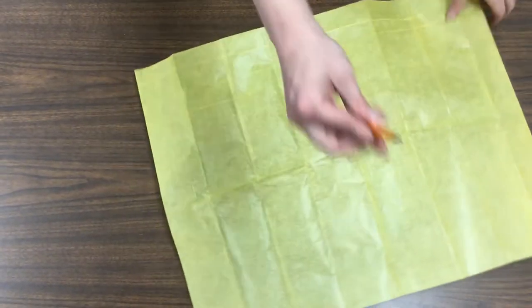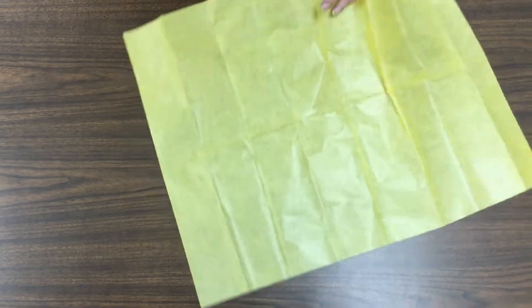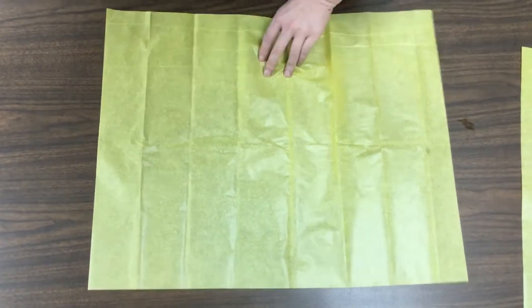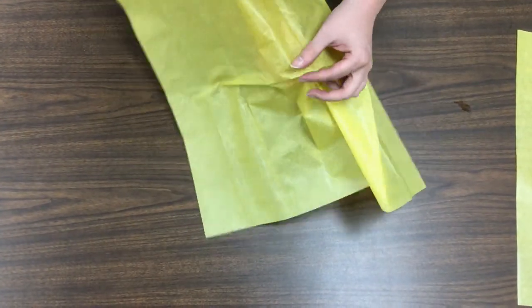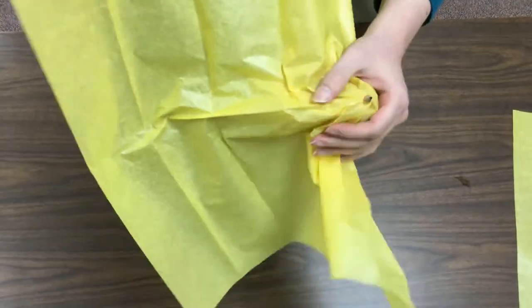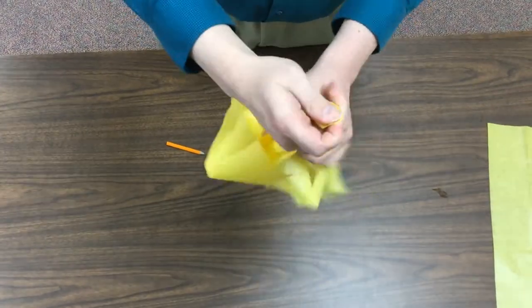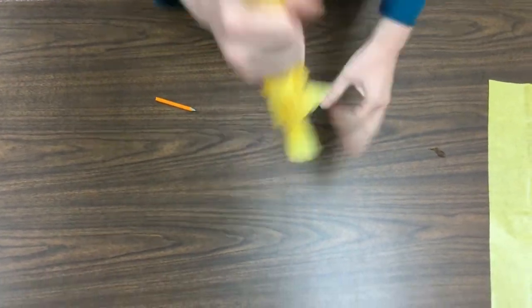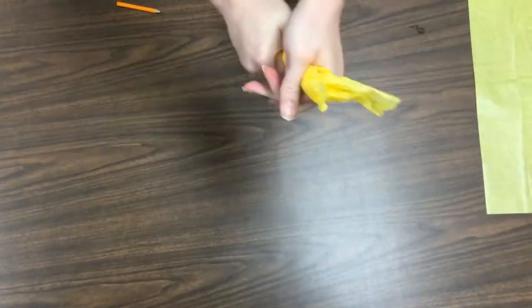We're going to take our tissue paper and a pencil and stick it underneath the center of the tissue paper, and then fold the tissue paper around that center point and smush it a lot.